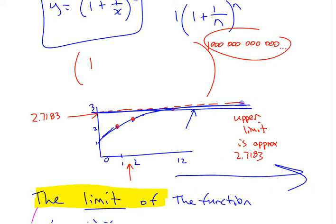the closer it comes, the closer the function gets to this line here, which was e, or roughly 2.7183.